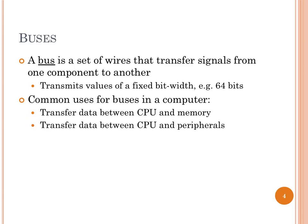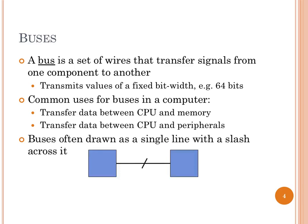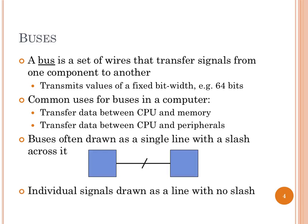Buses are used all over: moving data between processor and memory or peripherals. We have different kinds — data buses, address buses, and control buses that transfer information between parts of the processor. We normally draw them with a little slash across a line, because who wants to draw 64 lines next to each other? We write the number next to the slash to indicate width — for example, a line with a slash and '64' means a 64-bit bus. A line with no slash is a single signal.